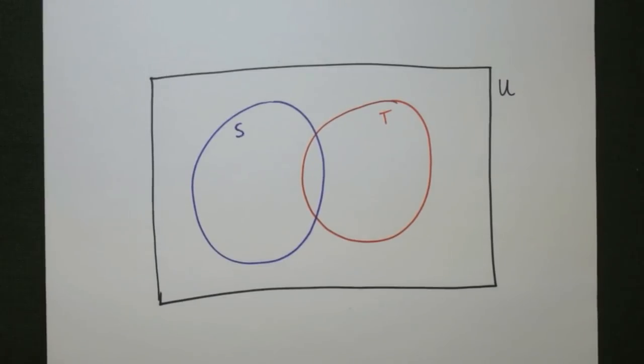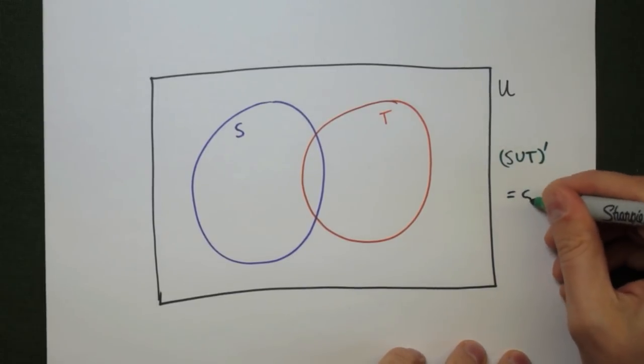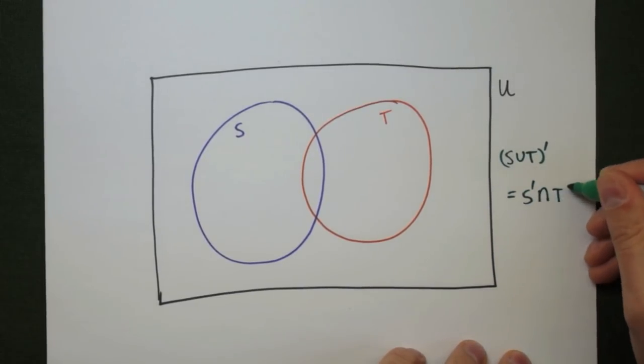To approach it from the other side, De Morgan's laws say that S union T complement is going to be S complement intersected with T complement.